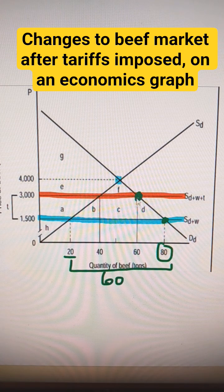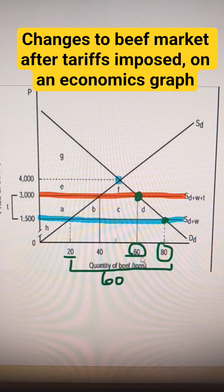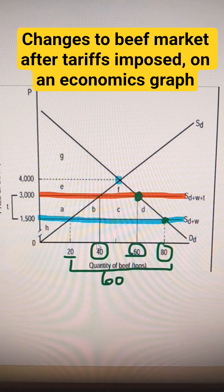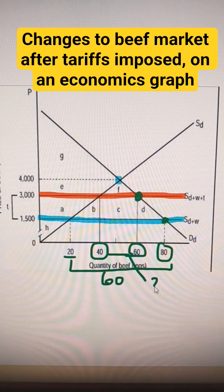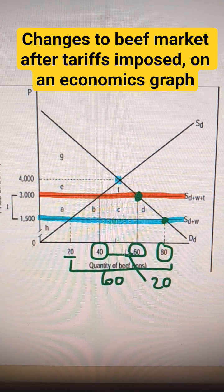So follow that out to where it hits the demand curve. Now they're going to buy 60,000. 40,000 will come domestically, so now the import number drops to 20,000, which is just the difference there.